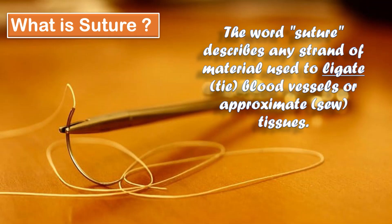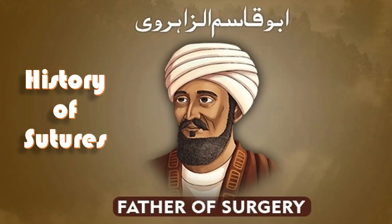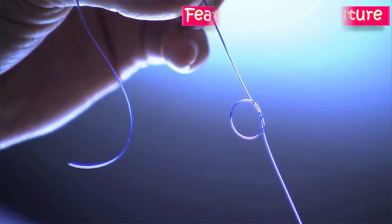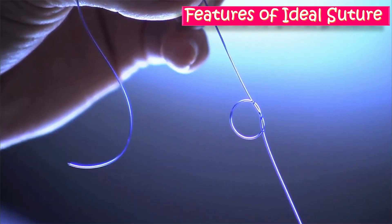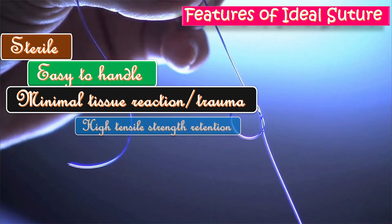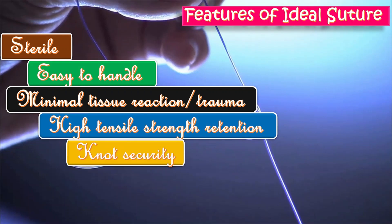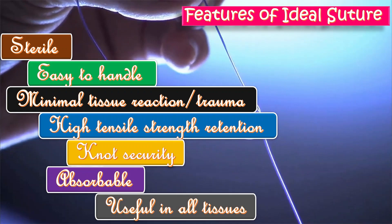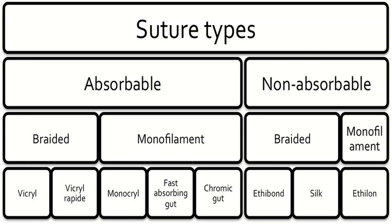In the history of sutures, in the 10th century AD, Abdul Qasim al-Zahrawi in Baghdad successfully performed thyroid surgery with the help of sutures. An ideal suture should be sterile, easy to handle, with minimal tissue reaction or trauma, adequate size and strength, retention security, ideally absorbable, and useful in all tissue types.